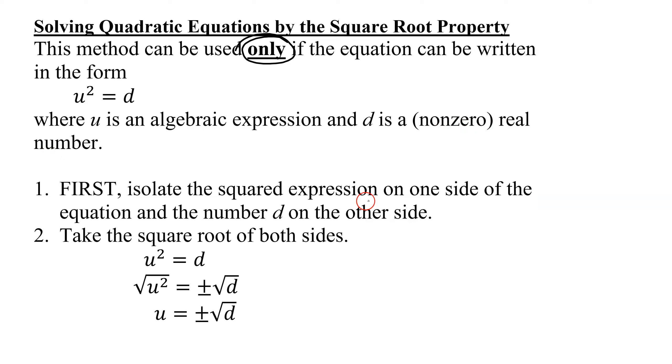First, isolate the squared expression on one side of the equation and the number d on the other to get u² = d. Then take the square root of both sides. This gives u = ±√d, because u² = d has two solutions.